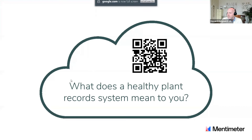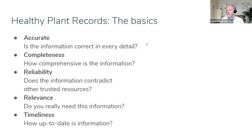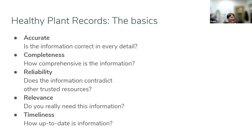There are different definitions of what is considered healthy data, but here is a quite classic and comprehensive one: five key elements that define good records, which can be applied to plant records. The first is completeness — how comprehensive is the information you have? For example, if you only have one coordinate out of two, it's definitely not complete even if the one you have is correct.